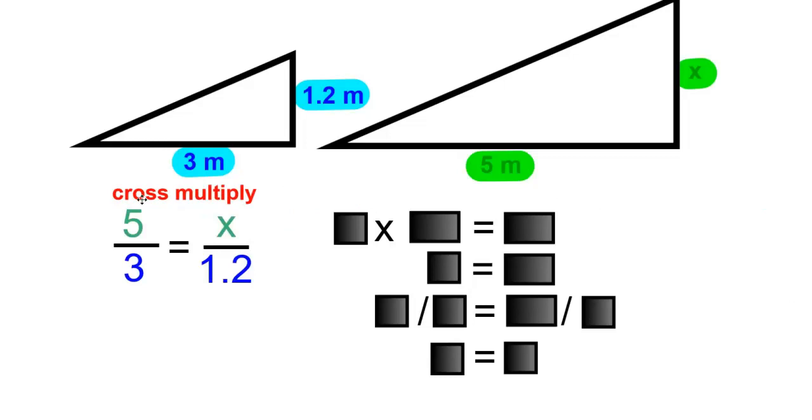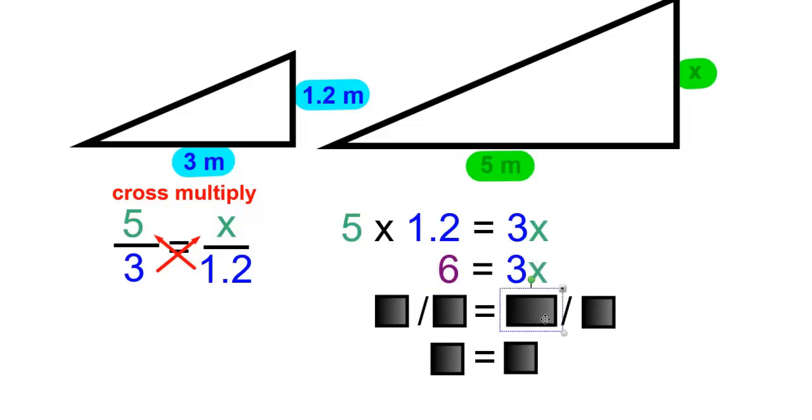To solve for X, we'll cross-multiply. So 5 times 1.2 is equal to 3 times X. 5 times 1.2 is 6, and 3 times X is 3X.